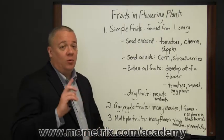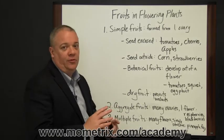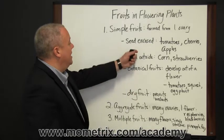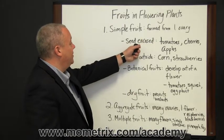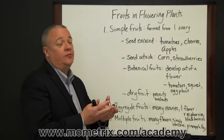Simple fruits are formed from one ovary and come in various forms. Within that category of simple fruits from one ovary, you can have the seed, the mature seed, encased by the fruit.